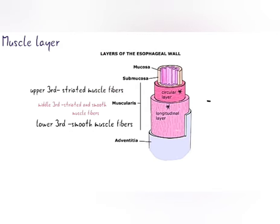Mucosa. Mucosa is the toughest coat of the esophagus. The entire mucosa is lined by squamous epithelium, whereas the last 3cm is lined by columnar cells. Columnar cells are the same as gastric mucosa, but oxyntic and peptic cells are absent.